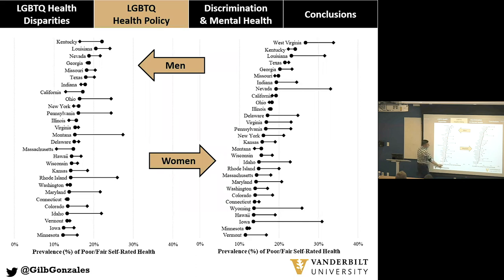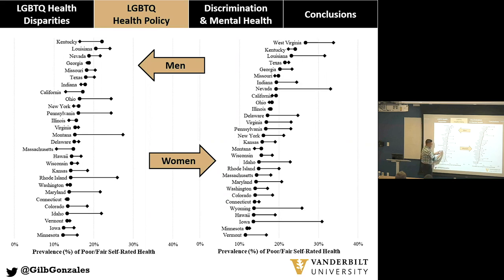In Maryland, about 15% of straight adults report poor or fair health, compared to 22% of sexual minority men — showing a clear disparity. In some states like Massachusetts and California, sexual minority men are actually doing better than their straight male counterparts. These are states with comprehensive protections. There are some interesting outliers like Kentucky where sexual minorities do better than straight peers — perhaps a resiliency story. The sample is restricted to states with at least 100 sexual minority respondents.